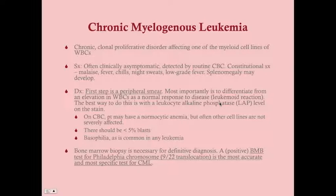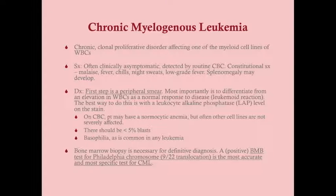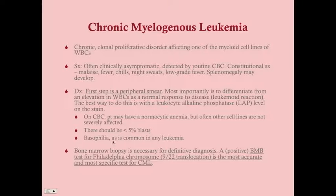On CBC, you may see normocytic anemia, though in chronic leukemia the other cell lines are not as severely affected as in acute leukemia, where you tend to see full-blown anemia and thrombocytopenia. There should be less than 5% blasts in the bone marrow, and basophilia may also show up on CBC, which is common in any leukemia.